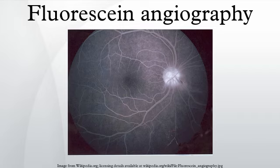Fluorescein enters the ocular circulation from the internal carotid artery via the ophthalmic artery. The ophthalmic artery supplies the choroid via the short posterior ciliary arteries, and the retina via the central retinal artery. However, the route to the choroid is typically less circuitous than the route to the retina, which accounts for the short delay between the choroidal flush and retinal filling.